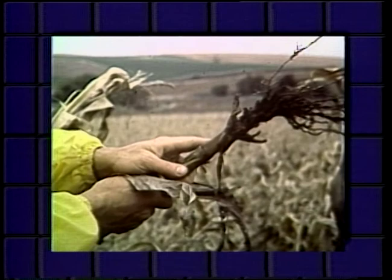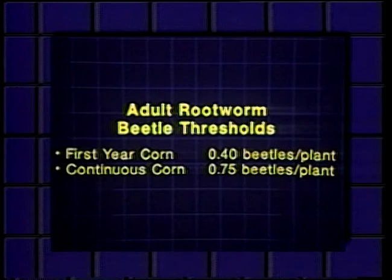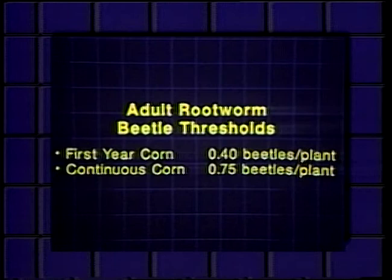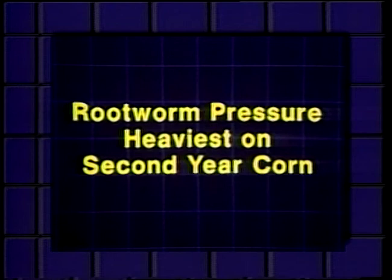Thresholds for adult beetles have been established and the techniques for scouting are available through the Extension Service. Notice that the thresholds for first-year corn are roughly one half that of other fields. This reflects the fact that most of the beetles present in first-year fields are egg-laying females. Many years of experience have taught us to expect the heaviest rootworm damage in second-year fields. Growers who scout fields will usually find that first-year fields exceed the adult beetle thresholds.